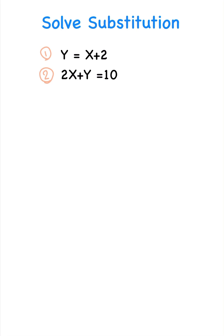In this scenario, we have y equals x plus 2. So I can plug that into the second equation in order to solve for x. So I'm going to write down 2x, and instead of y, we're going to write down x plus 2 equals 10.